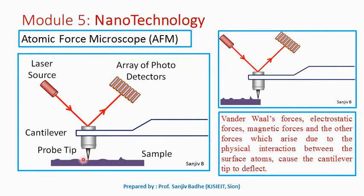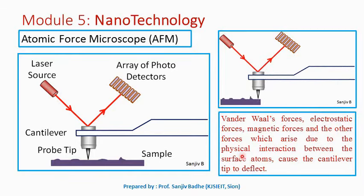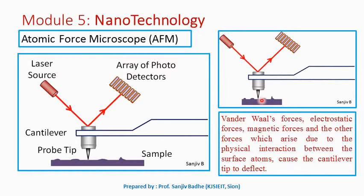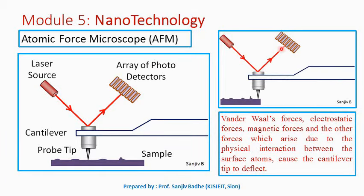When the cantilever tip is brought into proximity of the sample surface, forces such as Van der Waals forces, electrostatic forces, magnetic forces, and other forces arising due to physical interaction between surface atoms cause the cantilever tip to deflect. As the cantilever tip is deflected, the angle of the mirror will change, and depending on the change in angle, the reflected light ray will change direction.